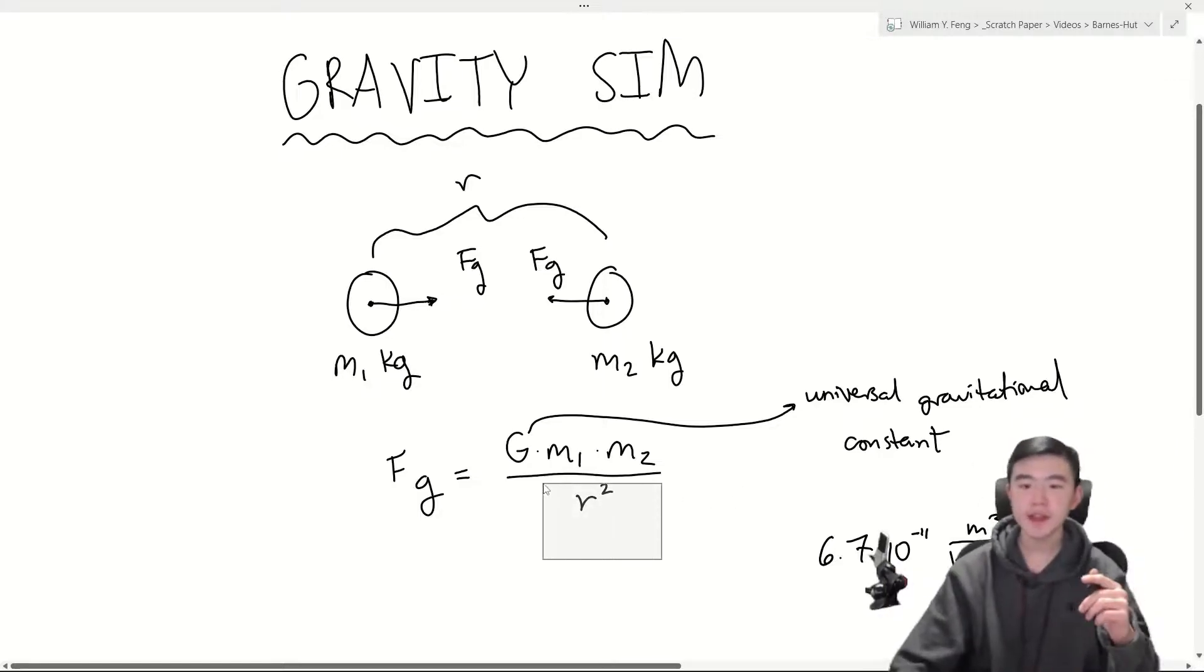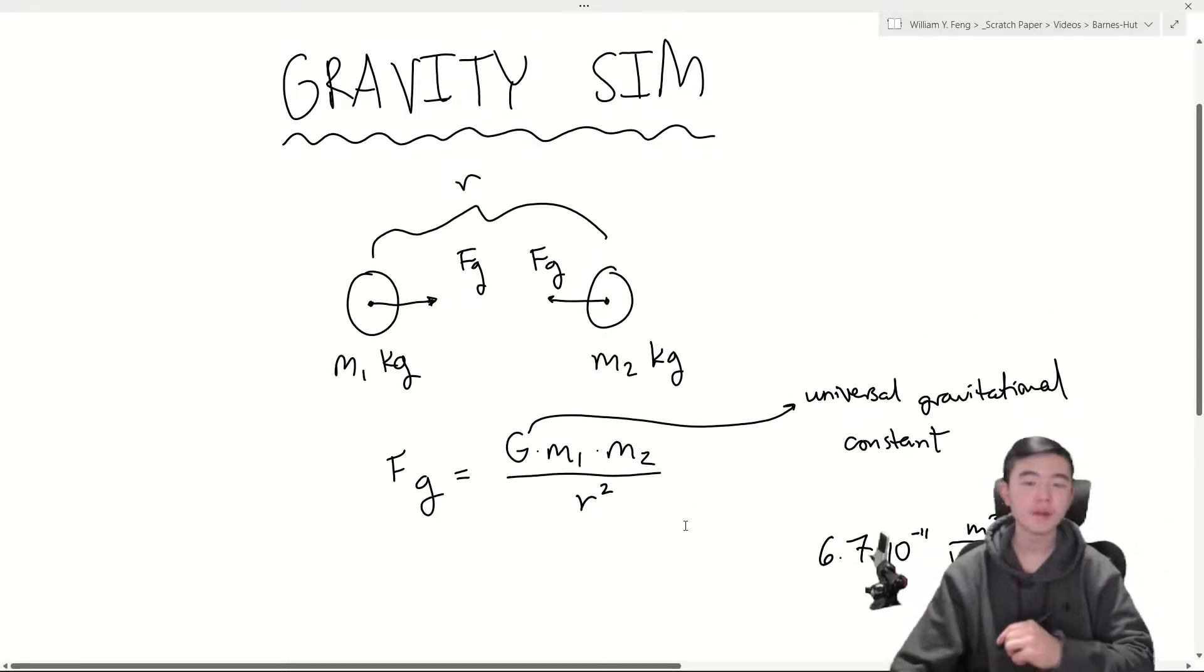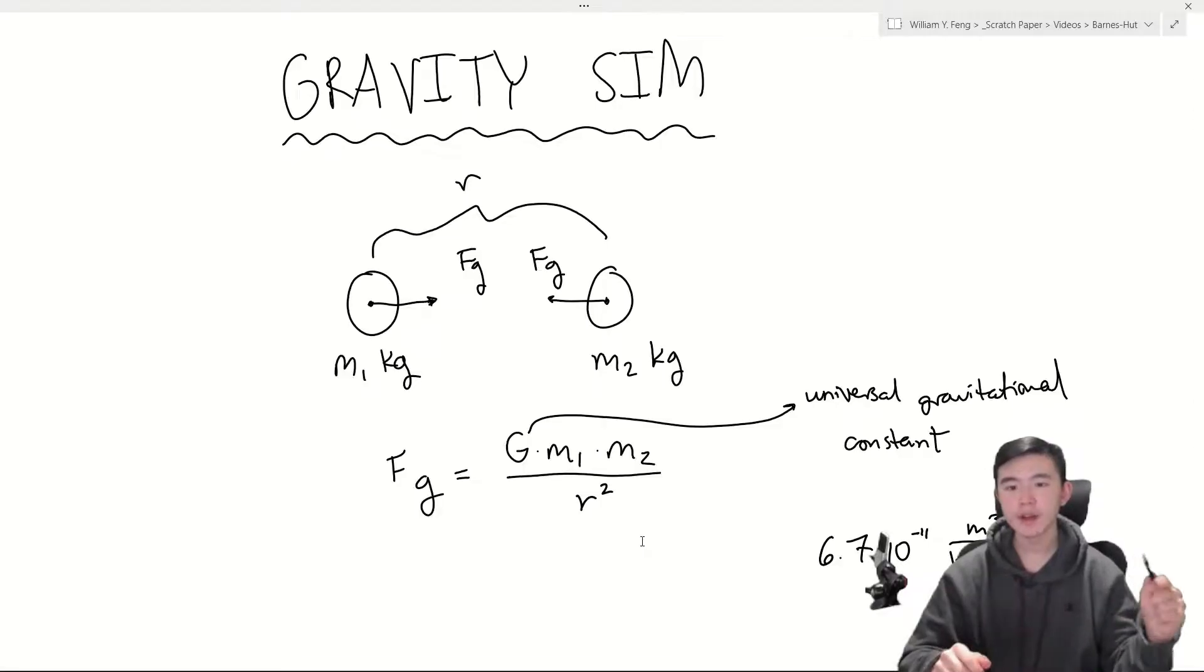I would also like to note that this over r squared is the inverse square law of gravity. There's a lot of other inverse square laws, but this basically means that gravity, given constant masses, is proportional to one over distance squared.